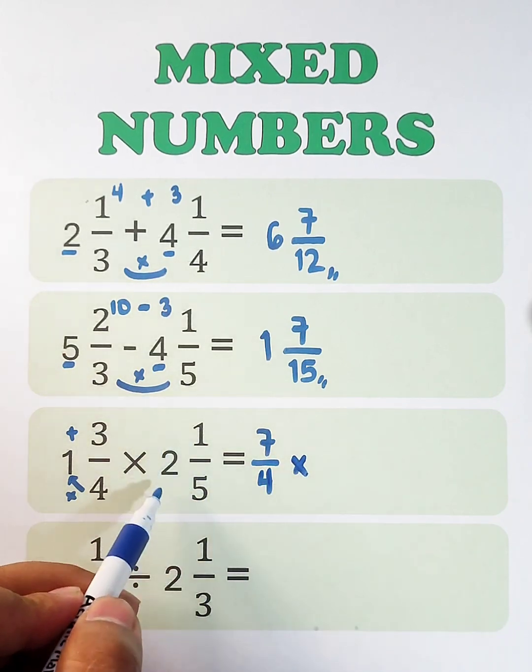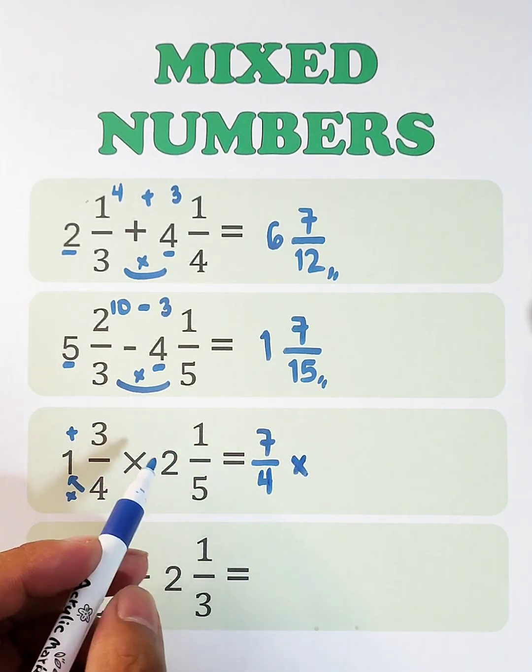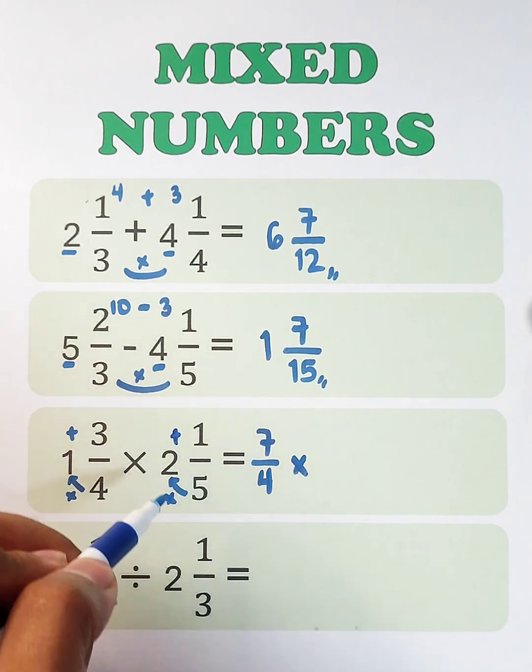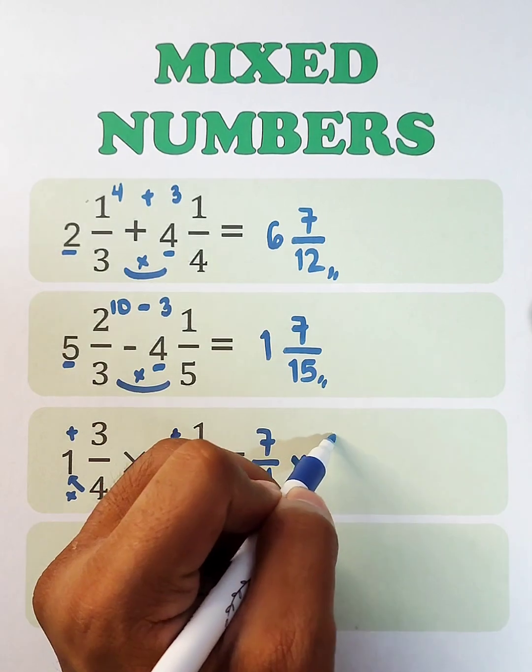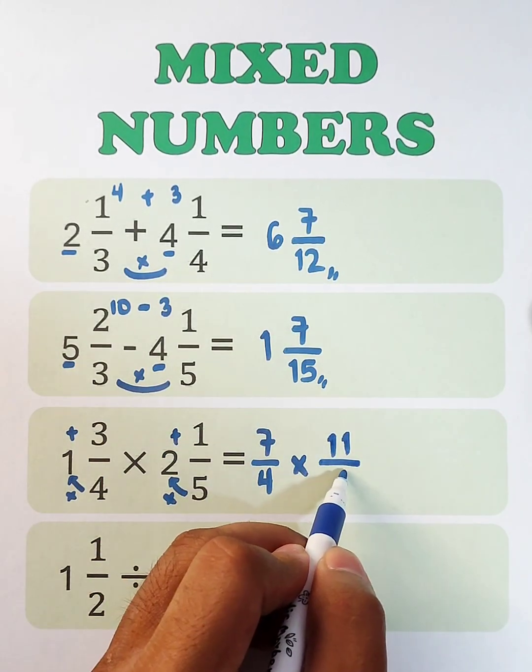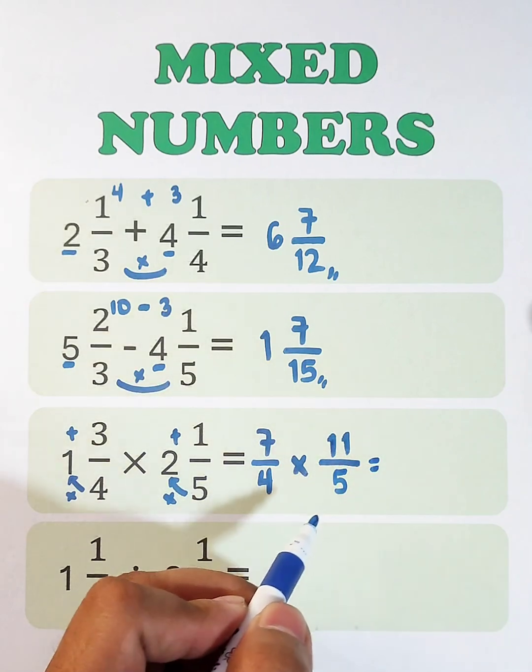Convert this mixed number into improper fraction. 5 times 2, which is 10, plus 1, that is 11, over 5. Then multiply the two fractions.